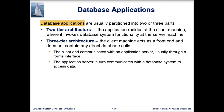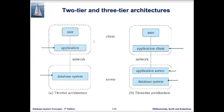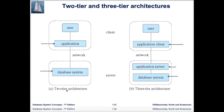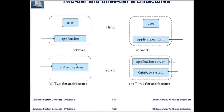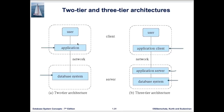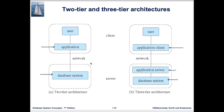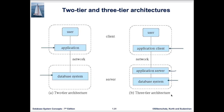There are two types of architecture: two-tier and three-tier. In two-tier architecture, the application on the client side connects to the database system through the network on the server side. In three-tier architecture, the application is composed of two parts: an application client on the client side and an application server on the server side. The application client and server communicate, and then the application server connects to the database system on the server side.